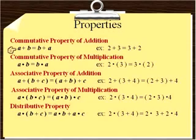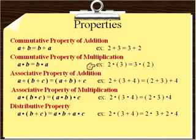For the commutative property of addition, A plus B is equal to B plus A. An example would be 2 plus 3 is the same as 3 plus 2, or 100 plus 1 is the same as 1 plus 100. For the commutative property of multiplication, A times B is the same as B times A. For example, 2 times 3 is the same as 3 times 2 — you get 6 either way.